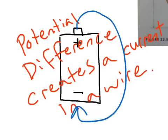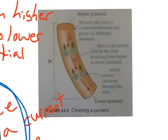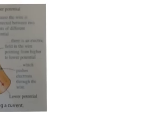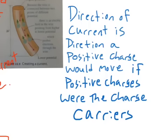We consider the direction of current to go from the positive plate to the negative plate. The reason is that before we knew what charge carriers were, current direction was defined as the direction positive charges would move — which is in the direction of the electric field. The electric field points from the positive plate to the negative plate, from higher potential to lower potential. So the direction of current in a metal is opposite the direction of motion of the electrons. The easy way to remember this: the direction of current is from the positive side of the battery to the negative side.